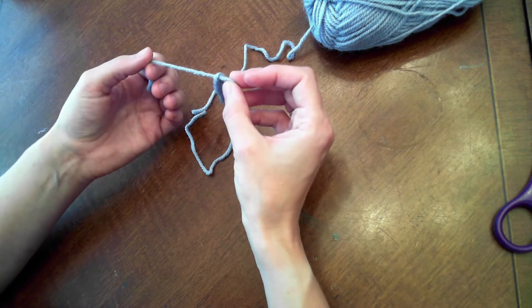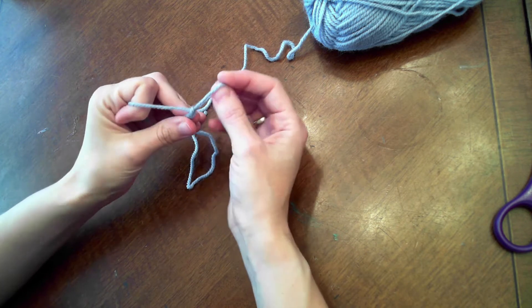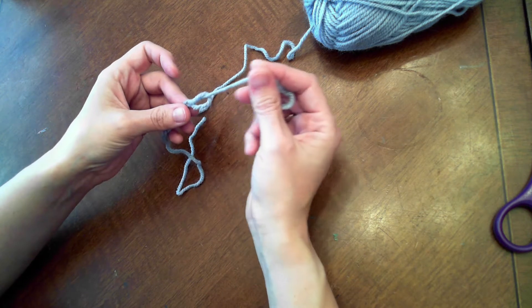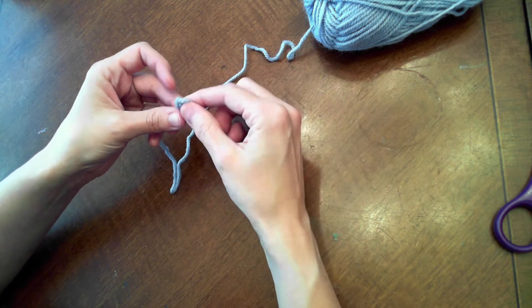After you've cut the yarn, you're just going to put your fingers through the loop, pinch that new tail you've cut, and pull it through. And there you have your chain stitch.